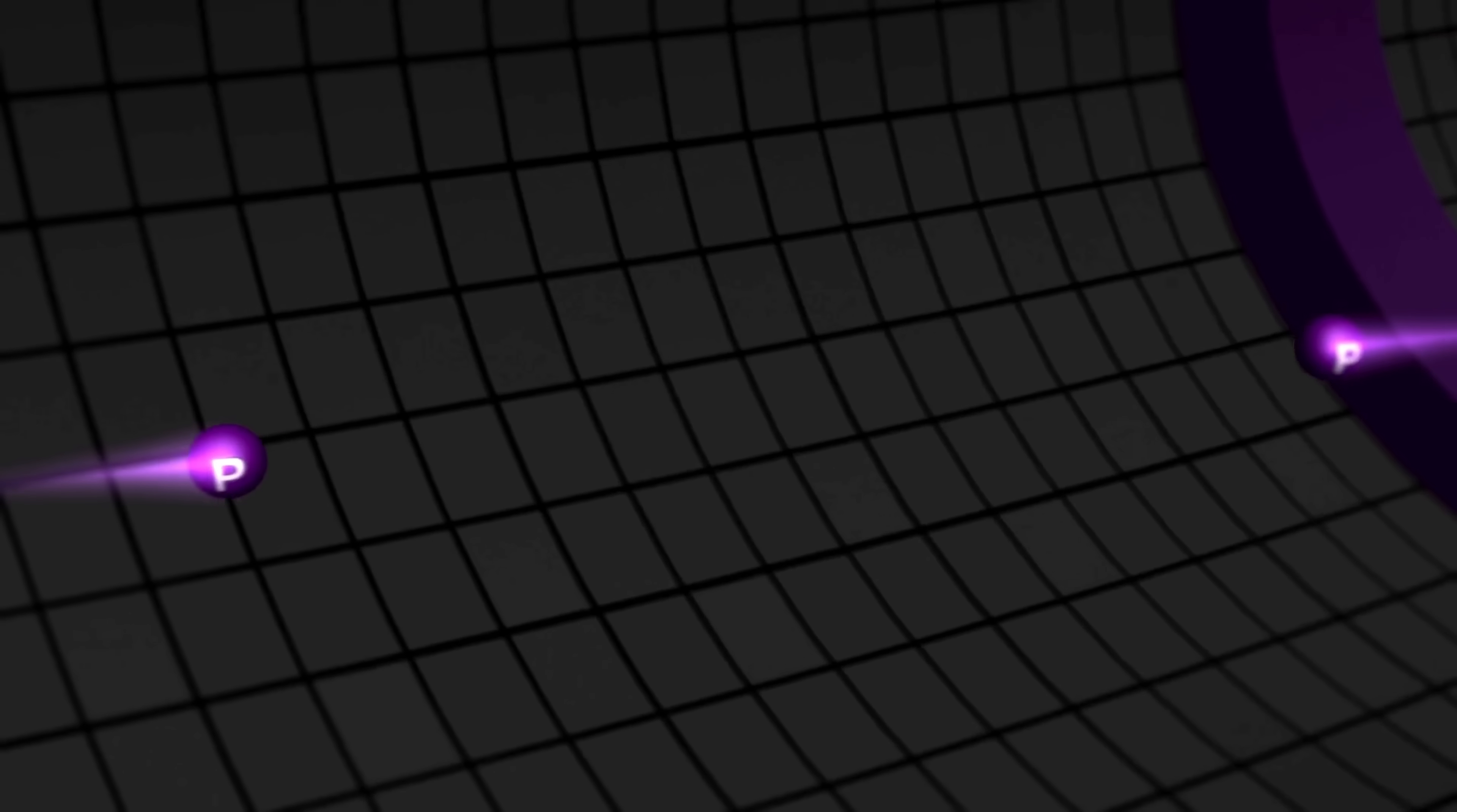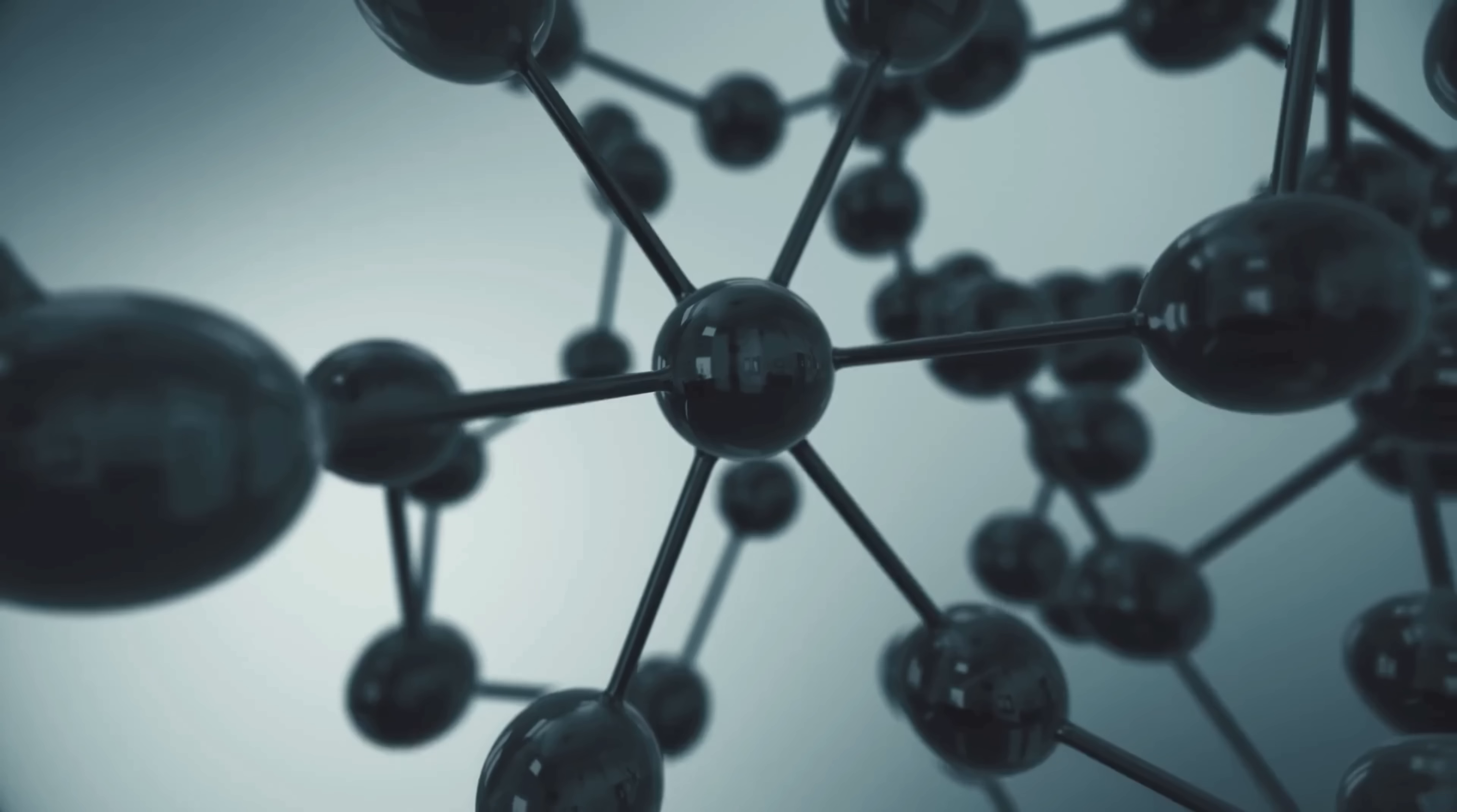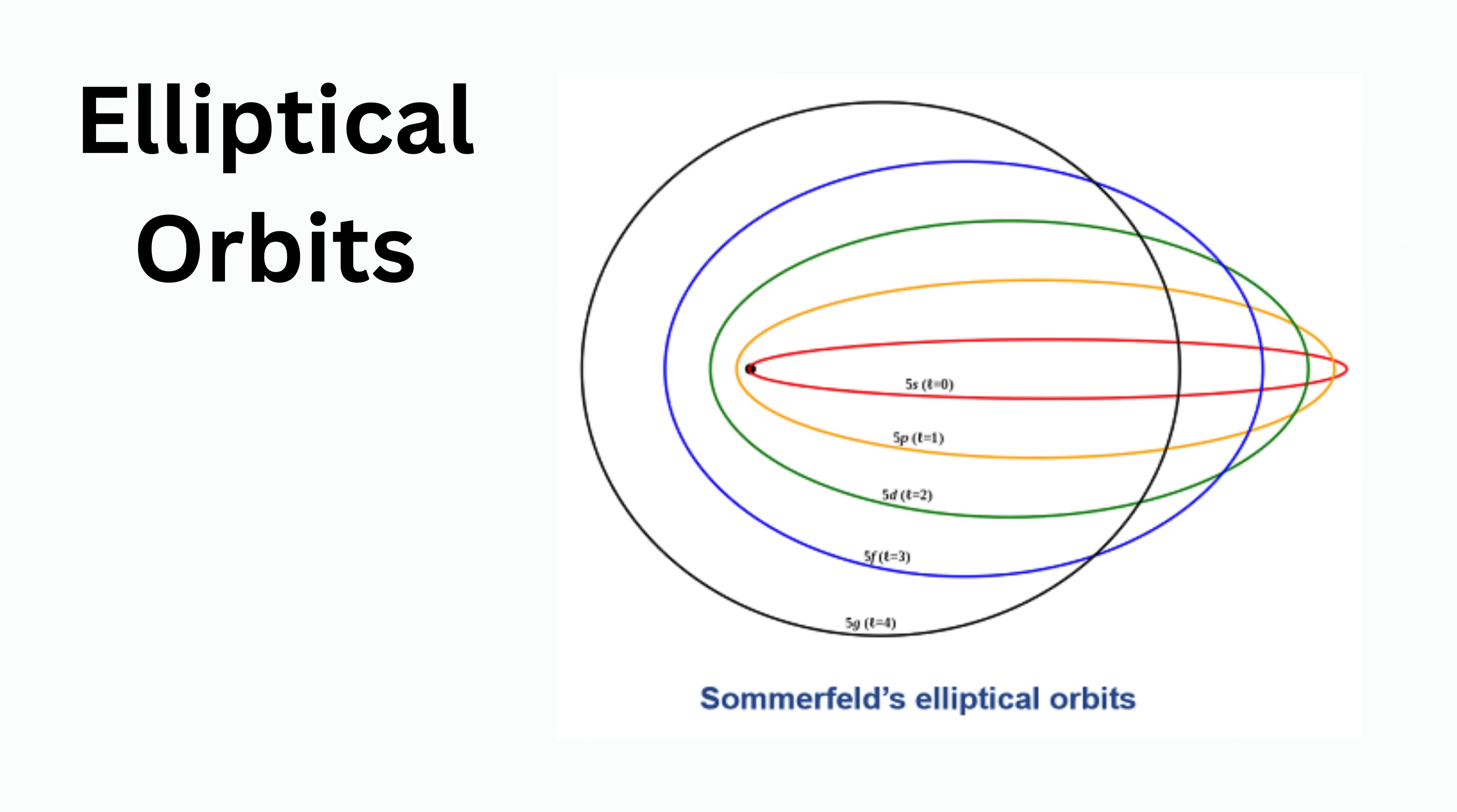As experiments pushed further, cracks began to show. The introduction of the Zeeman effect, where spectral lines split in a magnetic field, suggested that electrons had an additional property, something that Bohr's model couldn't account for. Scientists like Wolfgang Pauli and Arnold Sommerfeld expanded upon his ideas, introducing concepts like electron spin and elliptical orbits. But even these refinements weren't enough.